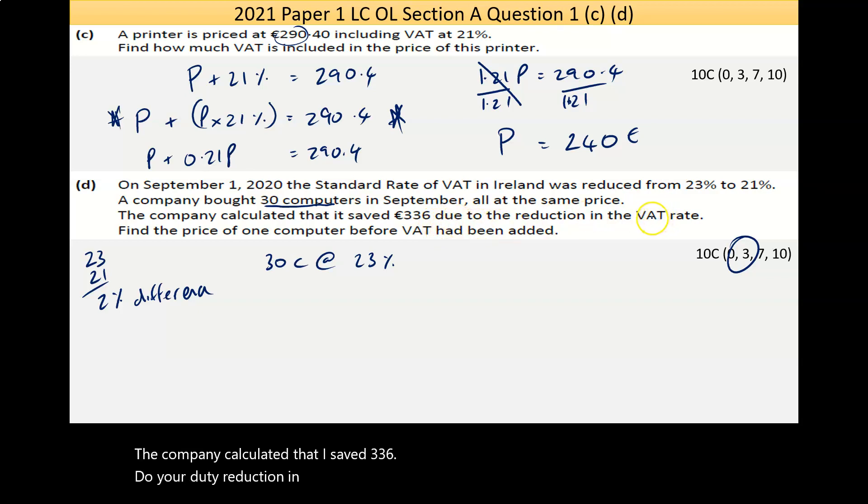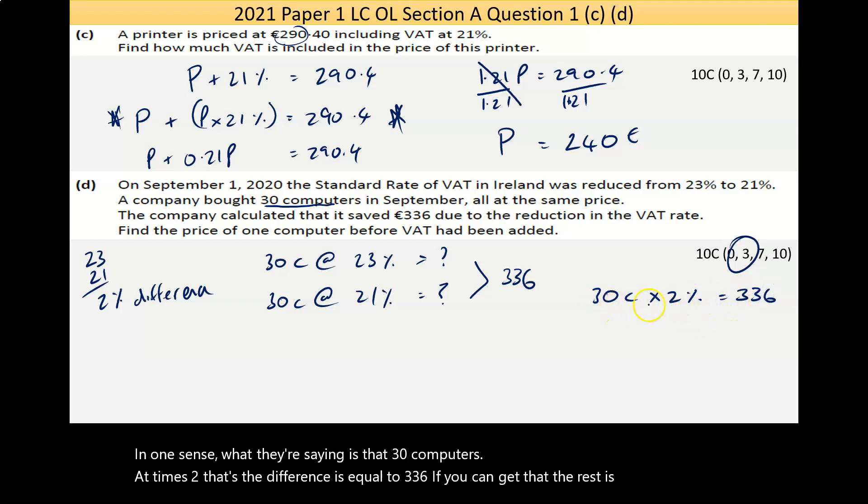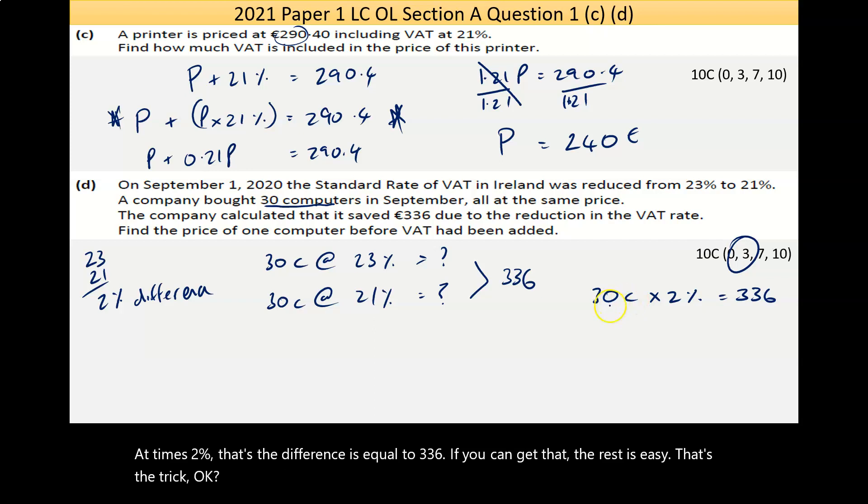You could go 30 computers at 23 percent. The company calculated that it saved €336 due to the reduction in the VAT rate. If they had bought the computers at 23 percent, they would cost whatever. If they bought the 30 computers at 21%, it would cost whatever. The difference in those two whatever's is the €336 - remember it's over 30 computers, that's why it's such a large amount. Find the price of one computer before VAT has been added. In one sense, what they're saying is that 30 computers times 2% difference equals €336.